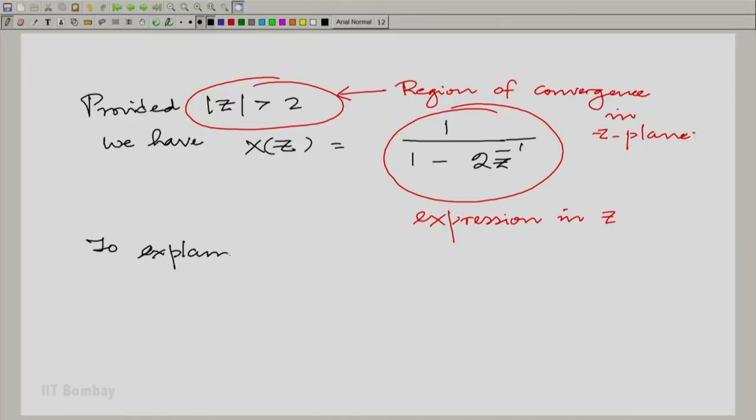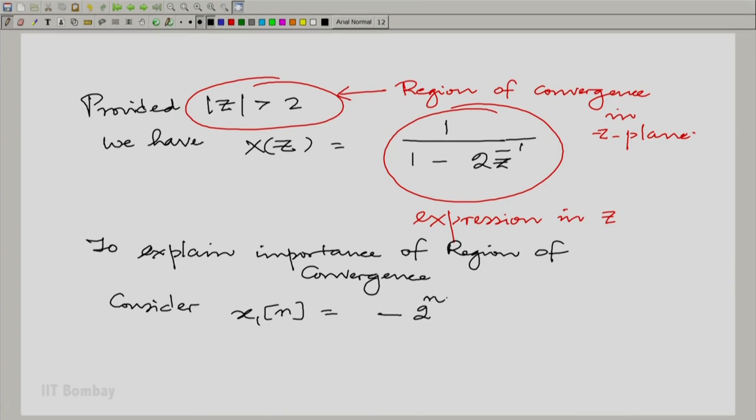Let me illustrate to you why it is important to have a region of convergence along with the expression. Can we separate the region of convergence or can we ignore the region of convergence and yet remain specific to the sequence? We will soon see the answer is no. Let us take a sequence that goes the other way. So here you have 2 raised to the power of n and it goes from 0 towards plus infinity. Let it go the other way. To explain the importance of the region of convergence, let us consider another sequence x 1 n, which is minus 2 raised to the power of n for n less than equal to minus 1. It is complementary in some sense and 0 else. It begins at minus 1 and goes backwards and it has the value minus 2 raised to the power of n. The same exponential sequence, but now it goes backwards starting at minus 1.